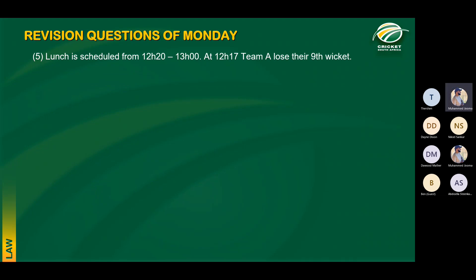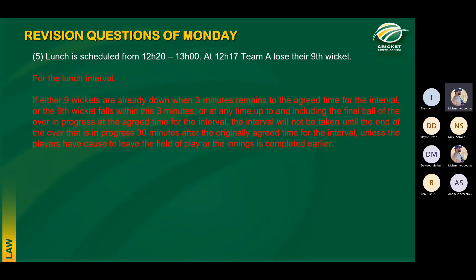Another question: a 40-minute lunch is scheduled from 12:20. At 12:17 Team A loses the ninth wicket. For the lunch interval, if nine wickets are already down when three minutes or less remains to the agreed time, or the ninth wicket falls within those three minutes, play continues up to and including the final ball of the over in progress at the agreed time. The interval will not be taken until the end of that over — 30 minutes after the originally agreed time, moving it to 12:50.